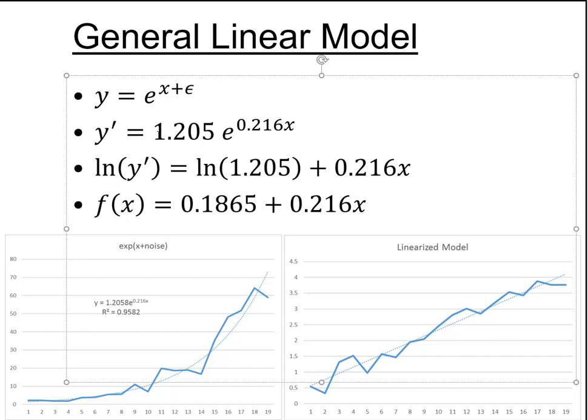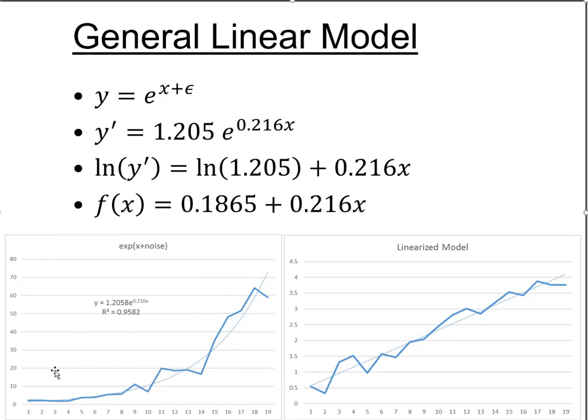One example of that might be this equation, which is what I used in Excel to create this graph. You're seeing this graph here, the smooth part. And then I injected some error into it in Excel. And then I ran an exponential regression against it, which linearizes it. The way you can do that is because natural log is the inverse of raising something to the power of e.